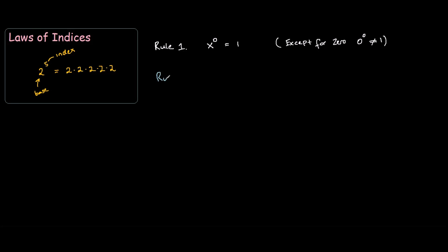Okay, rule 2. Any number raised to a negative index — call it the negative index n — what you do is you just put 1 over the number. So say it was 2 to the power of negative 3, it would be 1 divided by 2 to the power of 3, without the negative sign on the denominator.